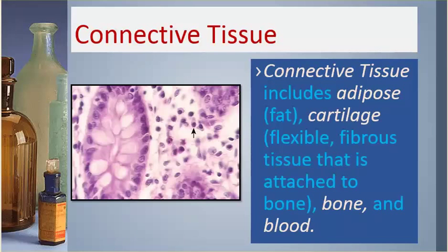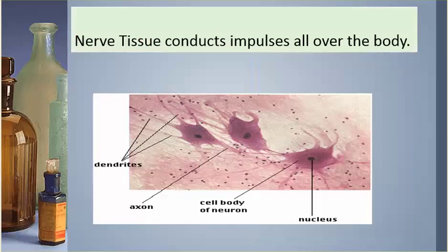Connective tissue includes adipose (fat), cartilage — flexible fibrous tissue that is attached to bone — bone, and blood. Nerve tissue conducts impulses all over the body.